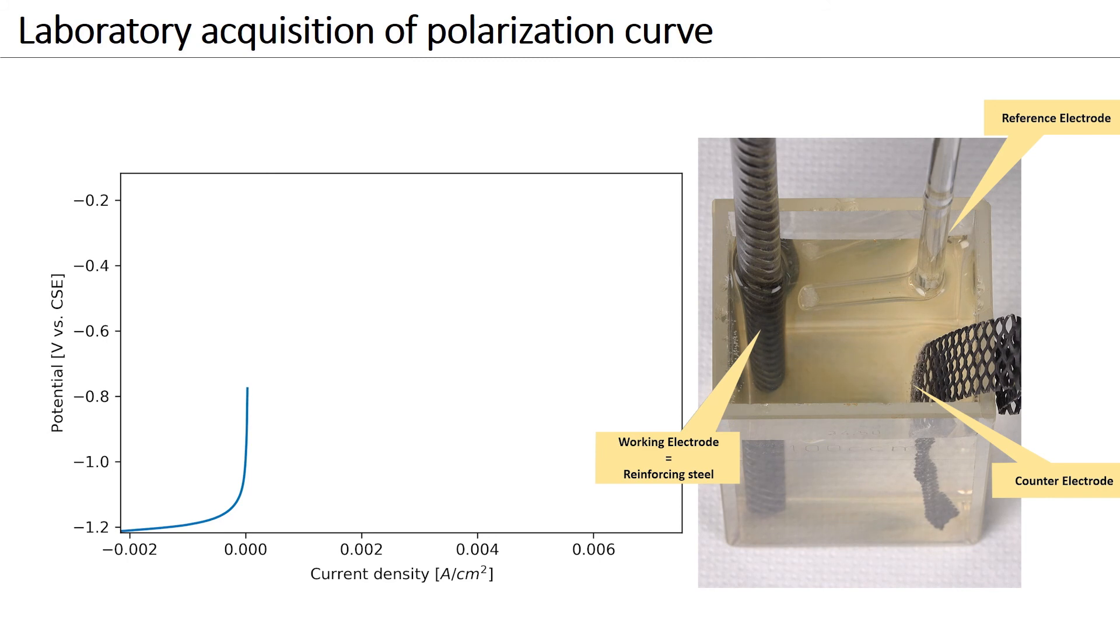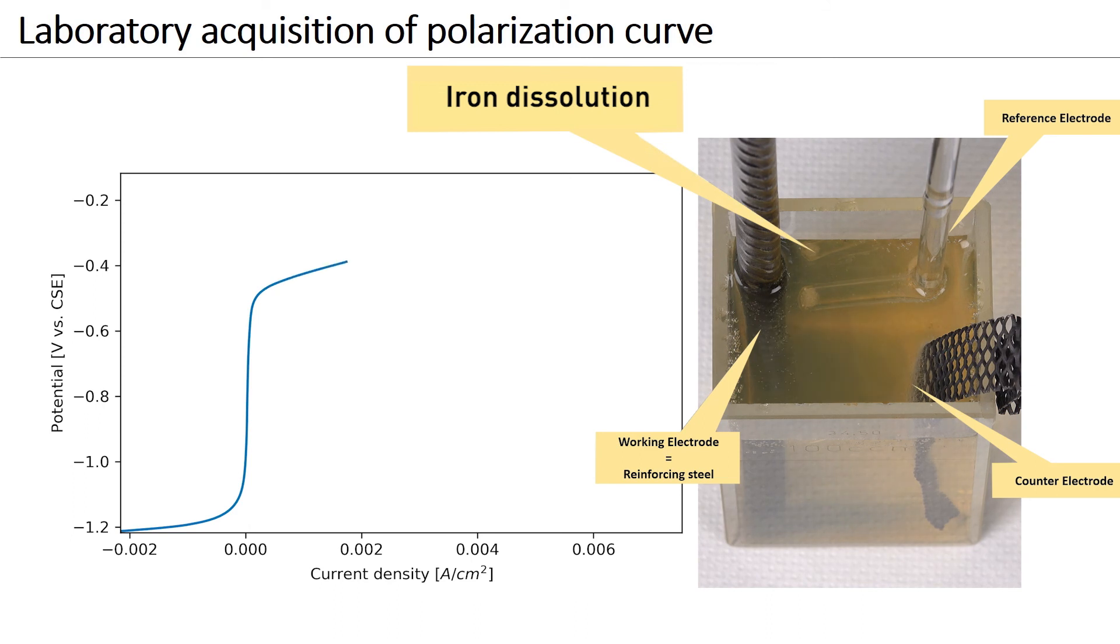As the potential is shifted in anodic direction, we can see that iron starts to dissolve, as is apparent from the dark brown color of the electrolyte.